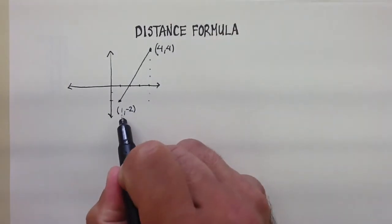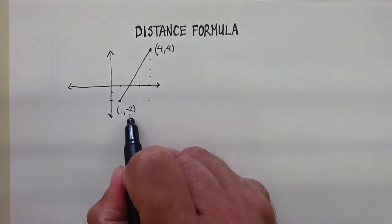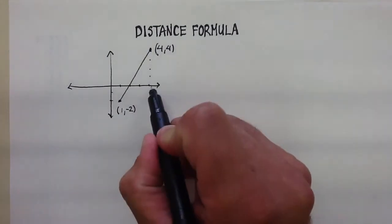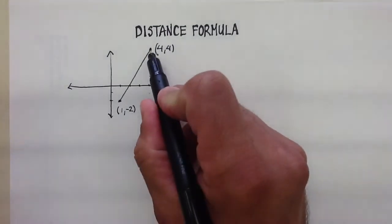So for example, what's the distance between this point here, which is (1, -2), and this point here, which is (4, 4)?